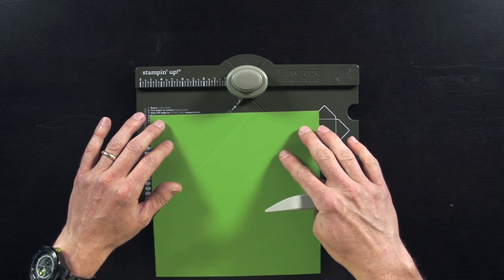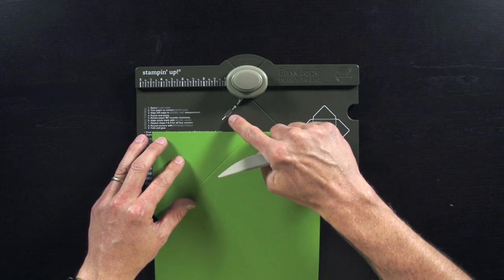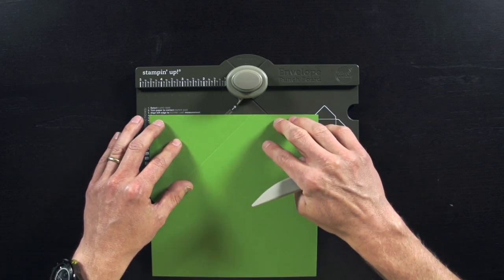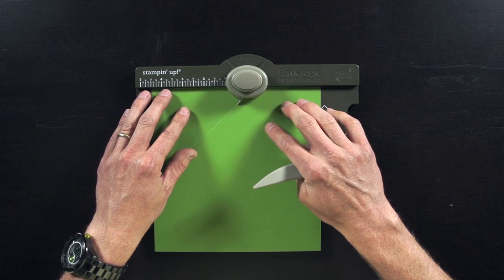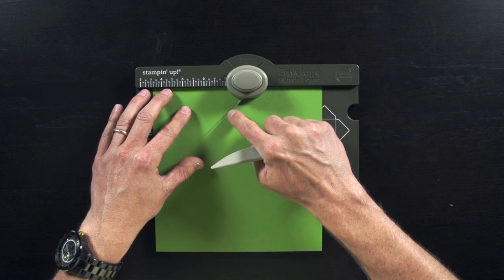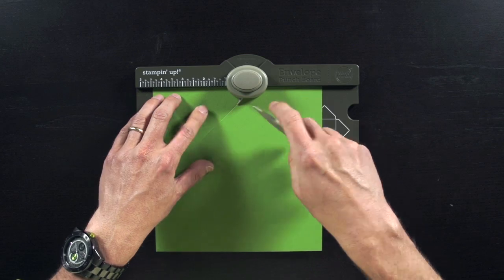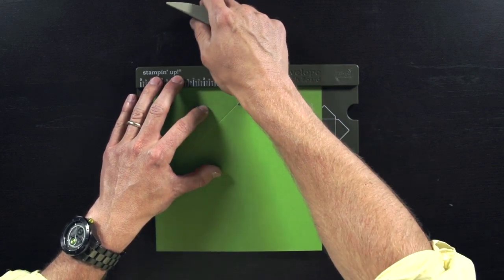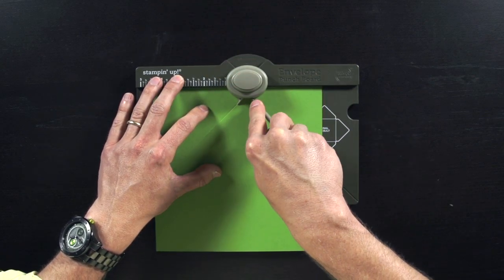So I'm going to twist that around to the next side. And there's some writing right here that says score guide. I'm going to line up the score line that I just made to that score guide right there. I don't have to measure anything else. Then I'm going to punch again, and then I'm going to score.